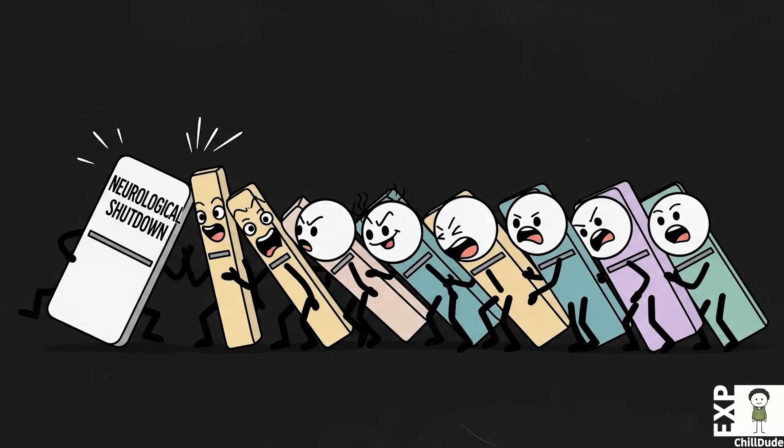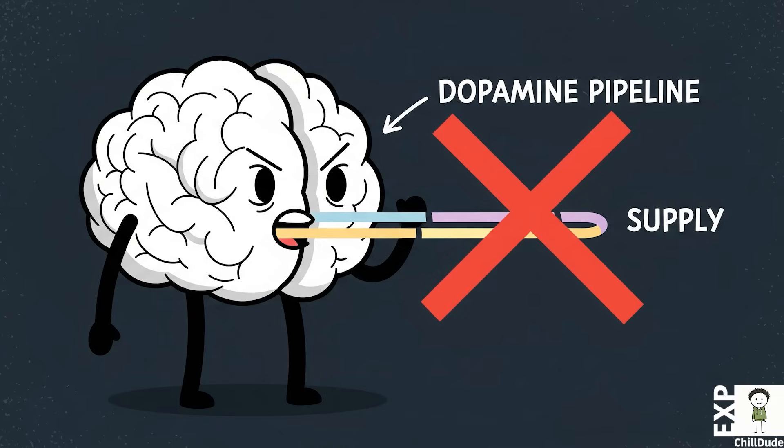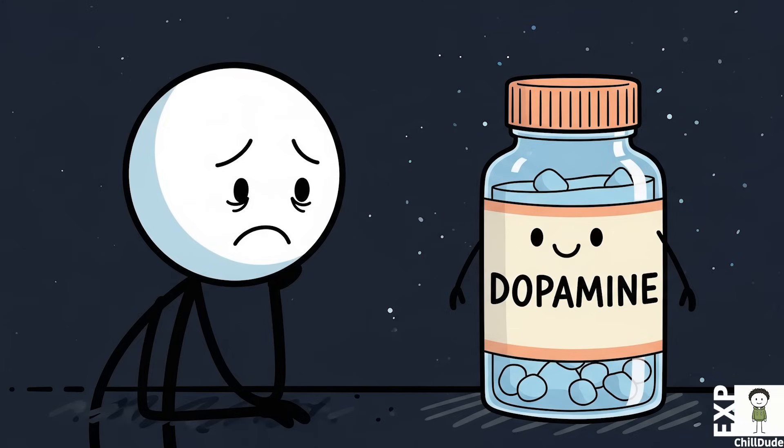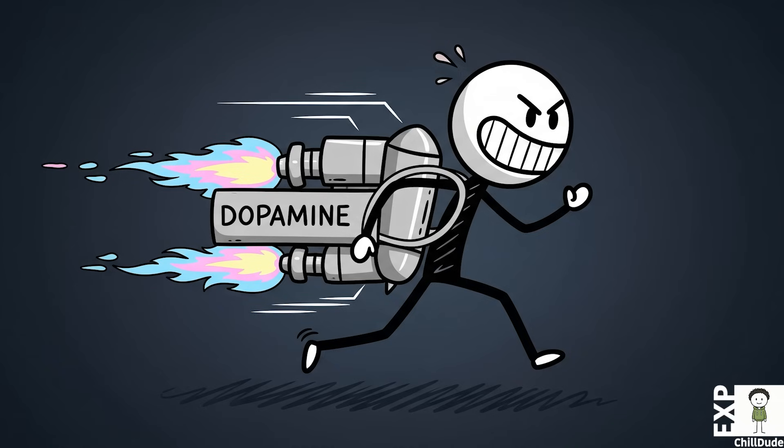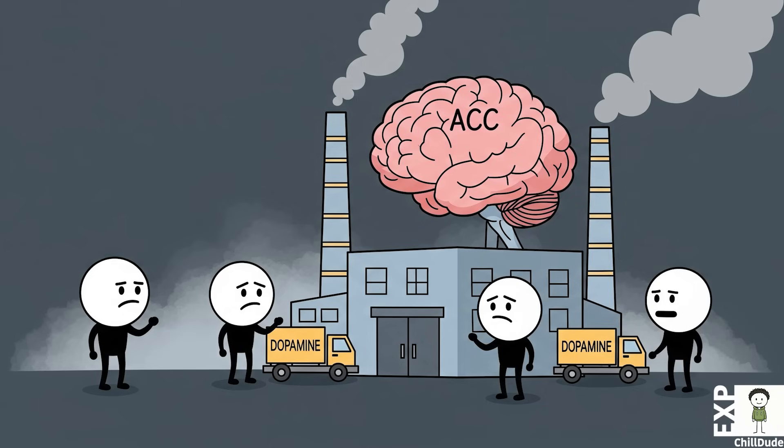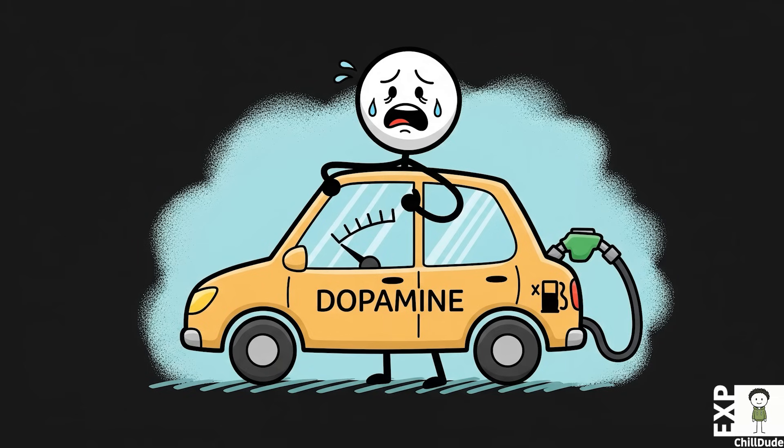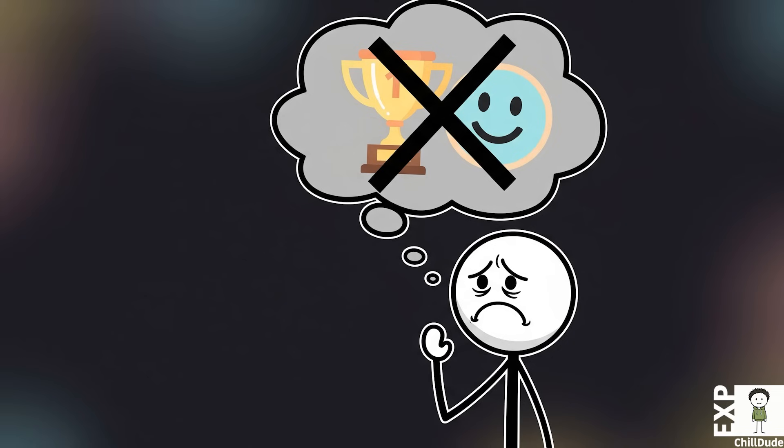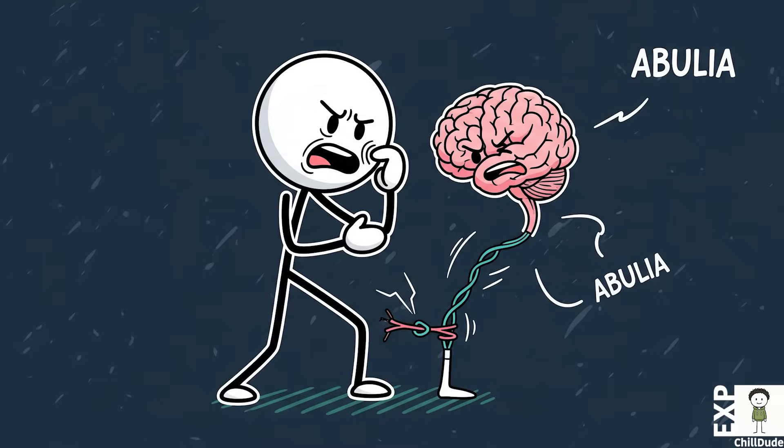This neurological shutdown triggers a catastrophic chemical cascade. The most important effect is the cessation of dopamine production and transmission related to that circuit. Dopamine is the brain's primary chemical messenger for motivation, reward, and pleasure. It is the go-get-it neurochemical that drives us to seek rewards and engage with the world. Without a functioning ACC to signal for it, the dopamine supply line is cut. The result is a direct and devastating manifestation of the symptoms Leach described. The loss of motivation and pleasure is apathy. The inability to initiate action is abulia.